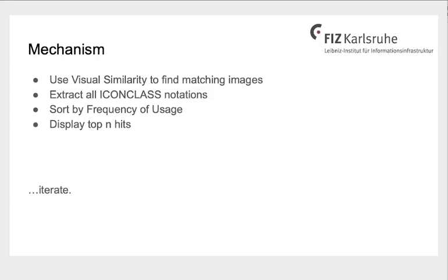What is the mechanism? Firstly, we do a visual similarity search to find the matching images. The IconClass notations are extracted, and the list is sorted by frequency of usage. We display the top 10 hits. The user can then iterate using either the IconClass notations or the visual similarity search.